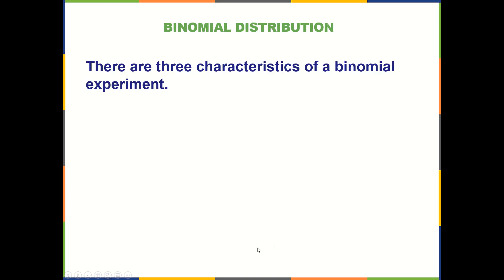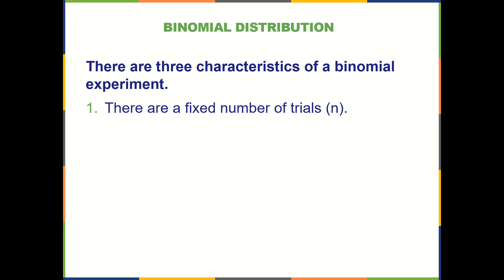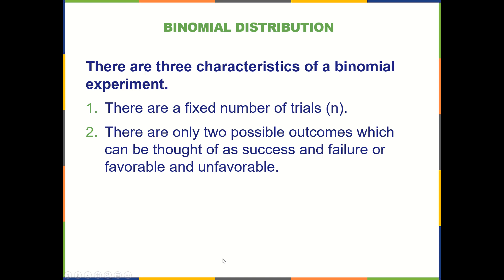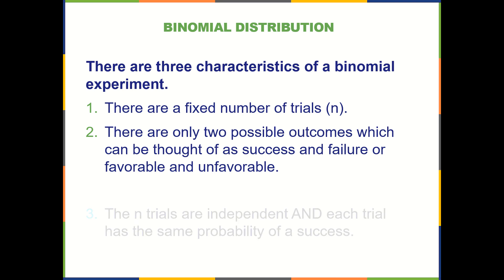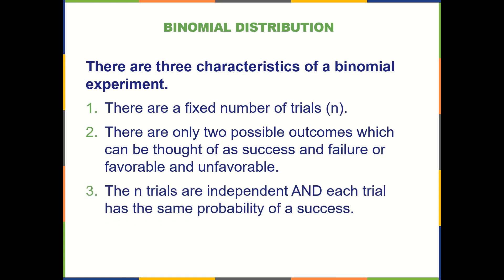There are three characteristics of a binomial experiment. First, there is a fixed number of trials — we need to know ahead of time n, how many times we're going to flip that coin. Second, there are only two possible outcomes, which can be thought of as success and failure, or favorable and unfavorable. Third, the n trials are independent and we have a constant probability of success, meaning every single trial the probability of getting a success is always the same.